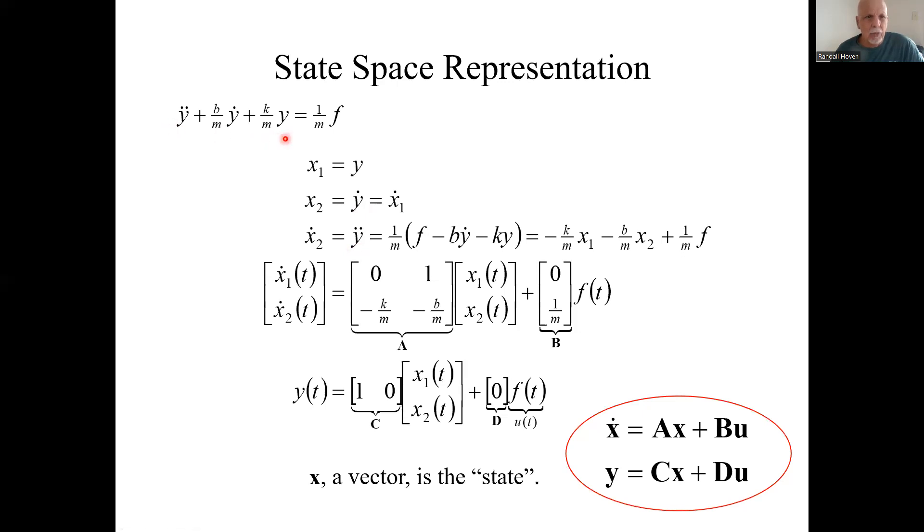x₂ dot, or the derivative of x₂, would be the second derivative of x₁ or the second derivative of y. You could solve for that from this original equation. We have x₁ dot equals x₂, and x₂ dot equals this, which is all in terms of x₁ and x₂.